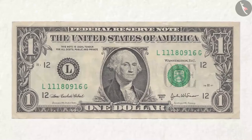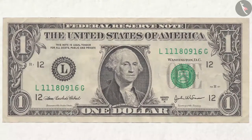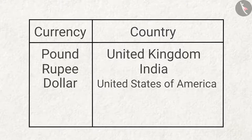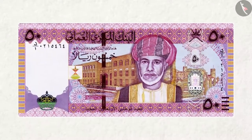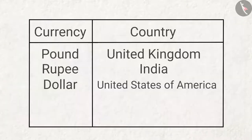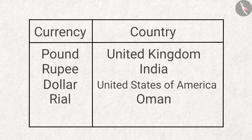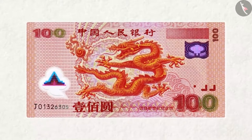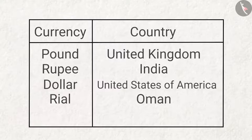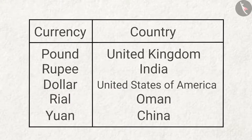To which country does this note belong and what is this currency called? This note belongs to the United States of America — it is called dollar. This red colored note belongs to which country, and by what name is it known? This note belongs to Oman and it is named rial. This is a note of which country and by what name is this currency known? This currency belongs to China and it is called yuan.